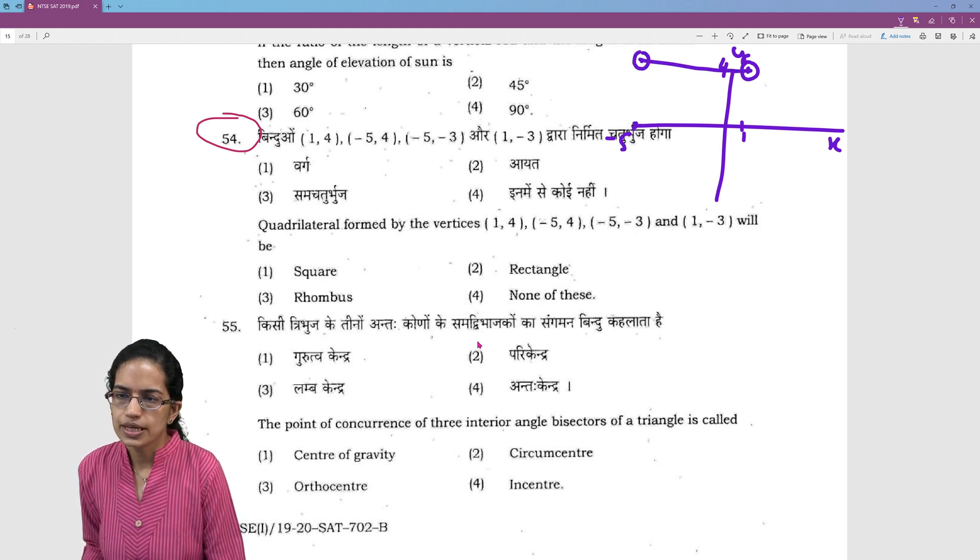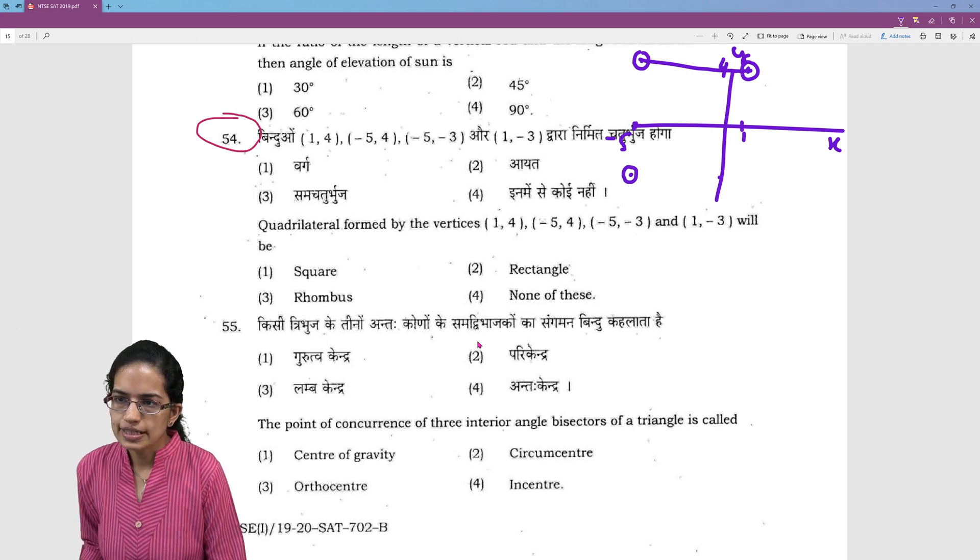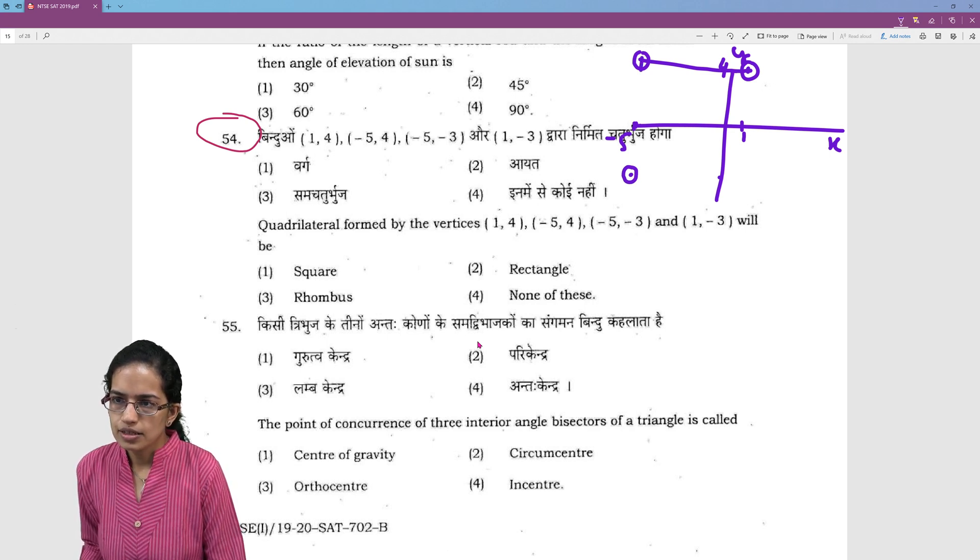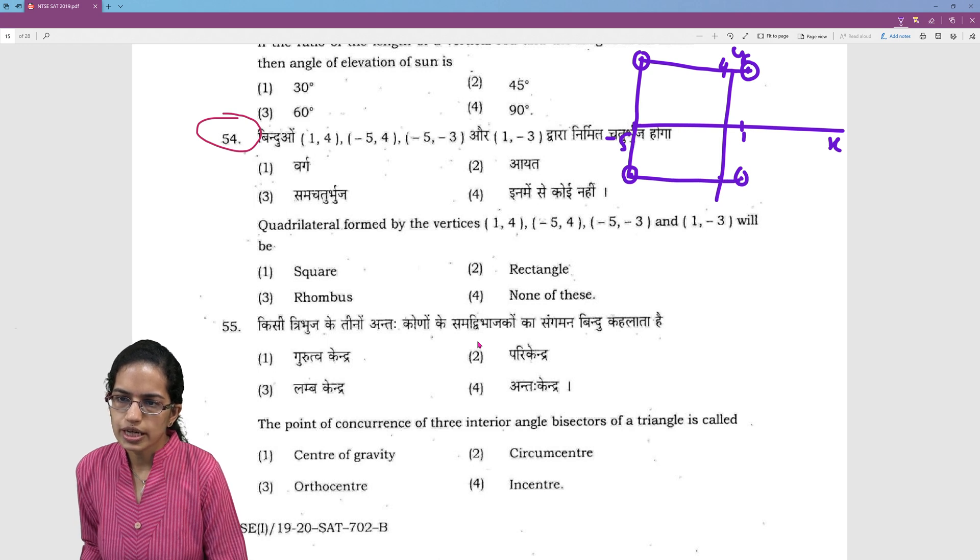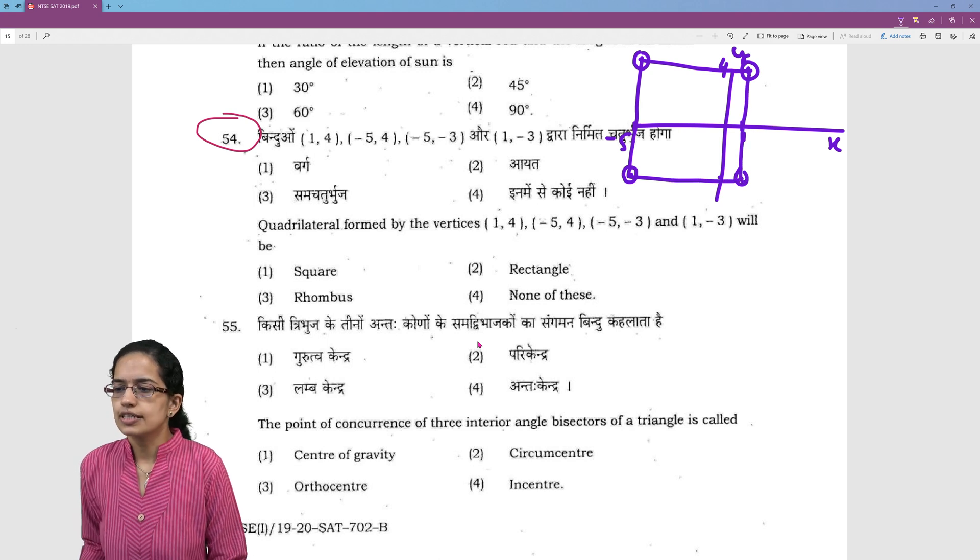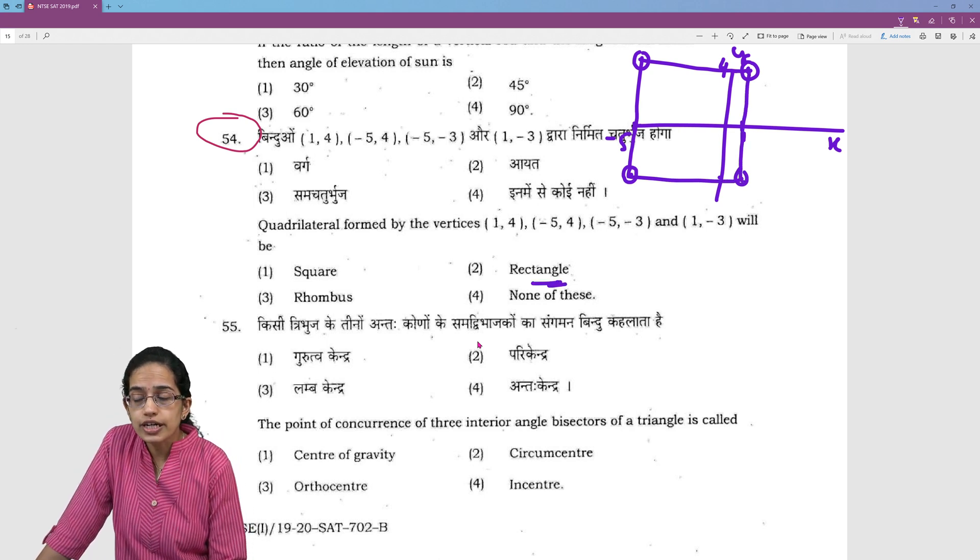So this would be a straight line. Then again minus 5 and minus 3. So this would be here. Again a point here. So minus 5 would be in the same line. So again a straight line. And then 1 and minus 3. So again a straight line.